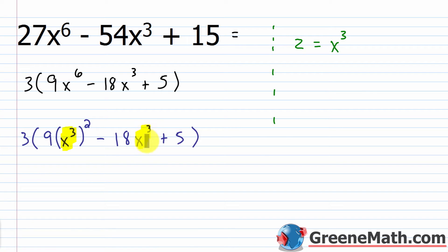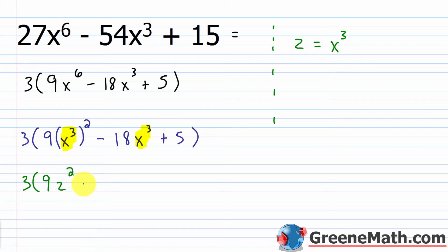So I now have 3 times (9(x cubed) squared minus 18x cubed plus 5). Here's x cubed and here's x cubed. Making the substitution with z equals x cubed, I get 3 times (9z squared minus 18z plus 5). All I have to do now is factor this as I normally would. Once I'm done, I go back and resubstitute to get my final answer.